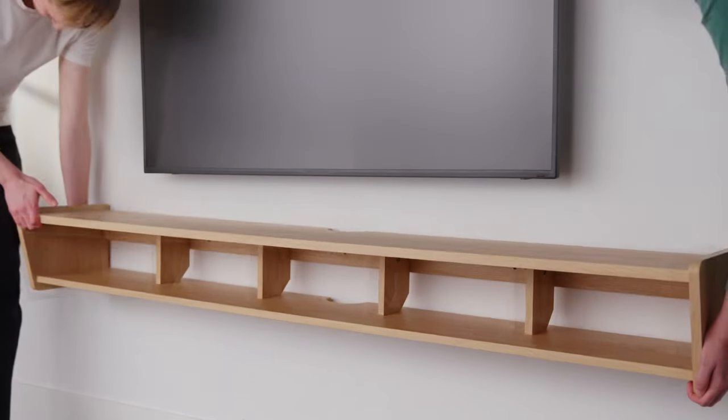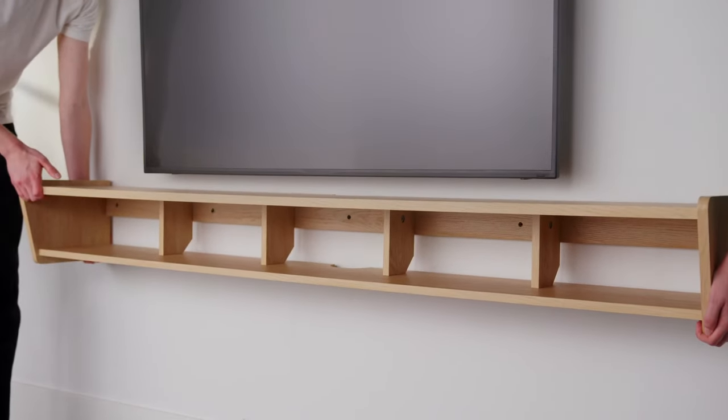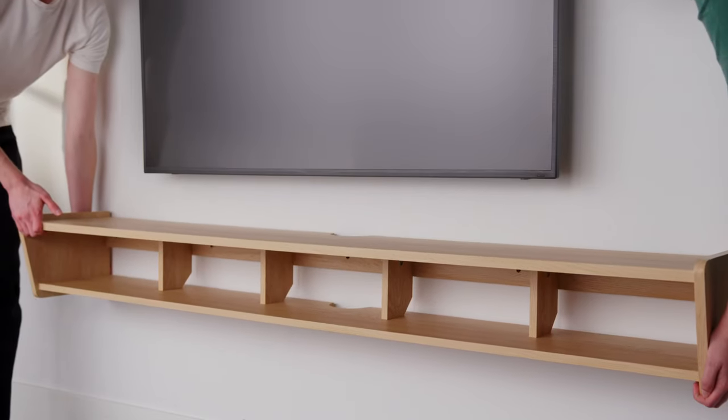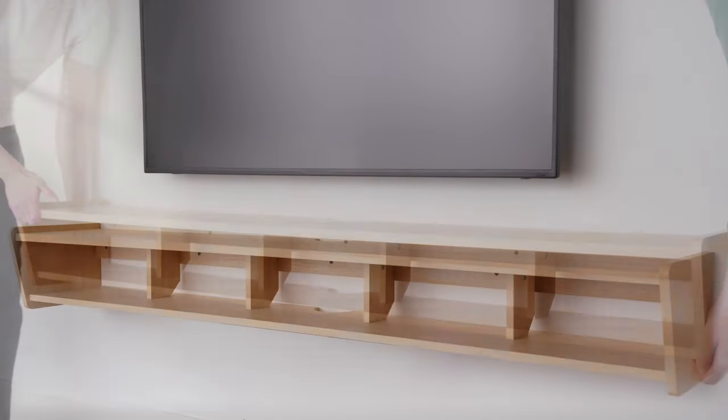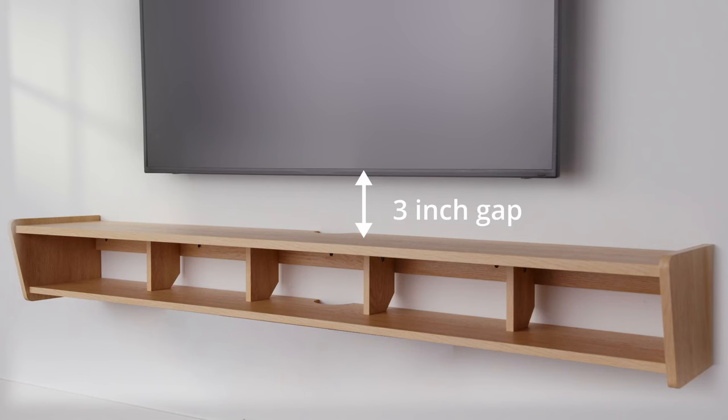Step 1. We recommend choosing a location for your TV stand based on where your TV is mounted. For this demonstration, we decided on a 3-inch gap between the top of the stand and the bottom of the TV.